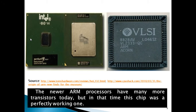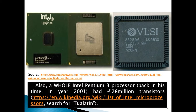The newer ARM processors have many more transistors today, but at that time the ARM2 was a perfectly working chip. Also, a whole Intel Pentium 3 processor, back in its time in year 2001, had around 28 million transistors. Please look at the list of Intel microprocessors and search for Tualatin.